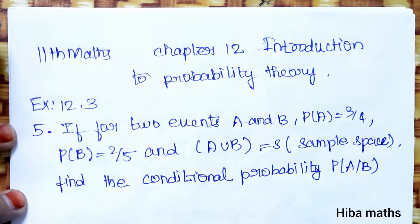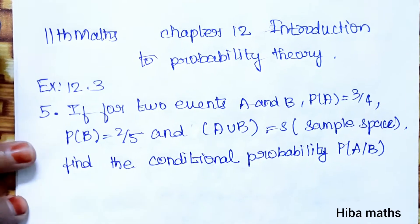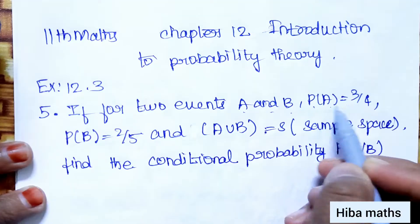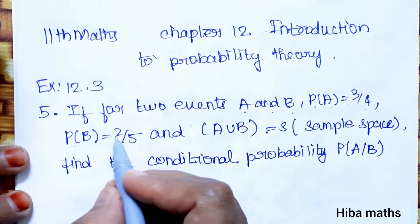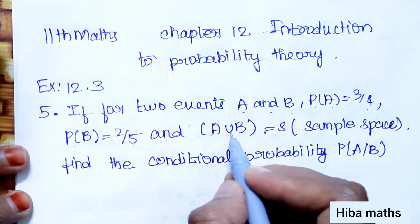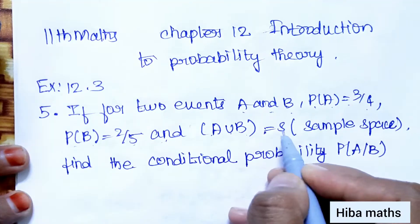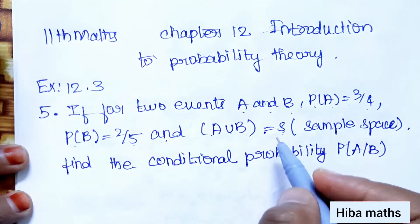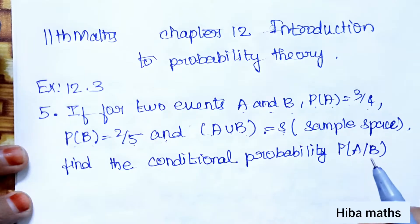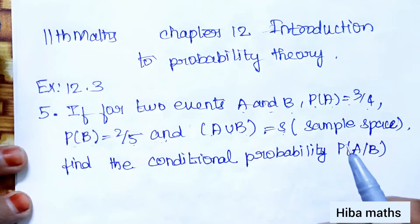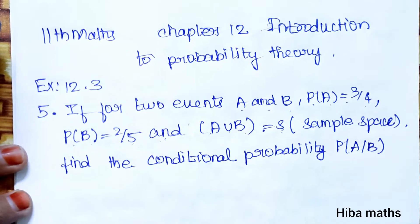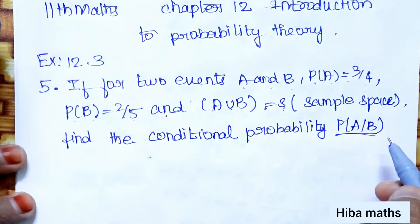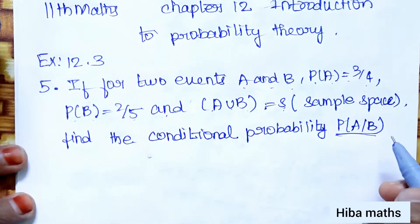5th question — I'll solve it for you. For two events A and B: P(A) = 3/4, P(B) = 2/5, and A union B is equal to S (the sample space), so P(A∪B) = P(S) = 1. Find the conditional probability of A given B.